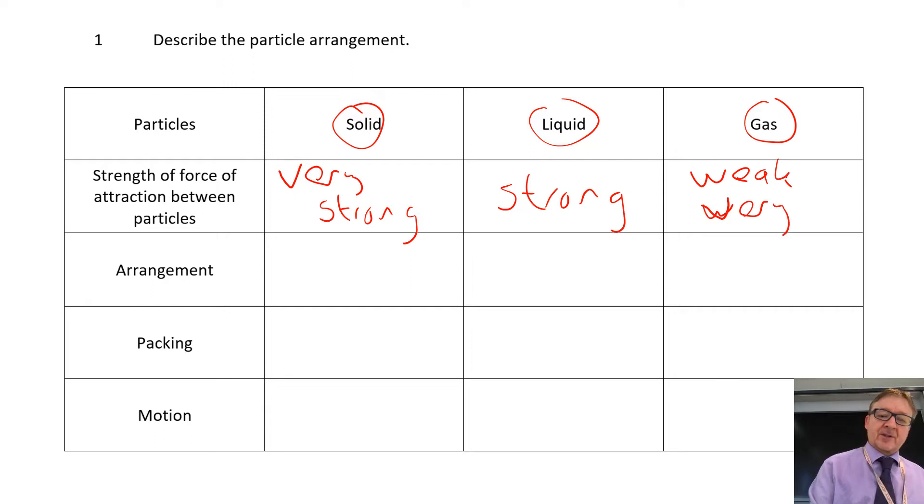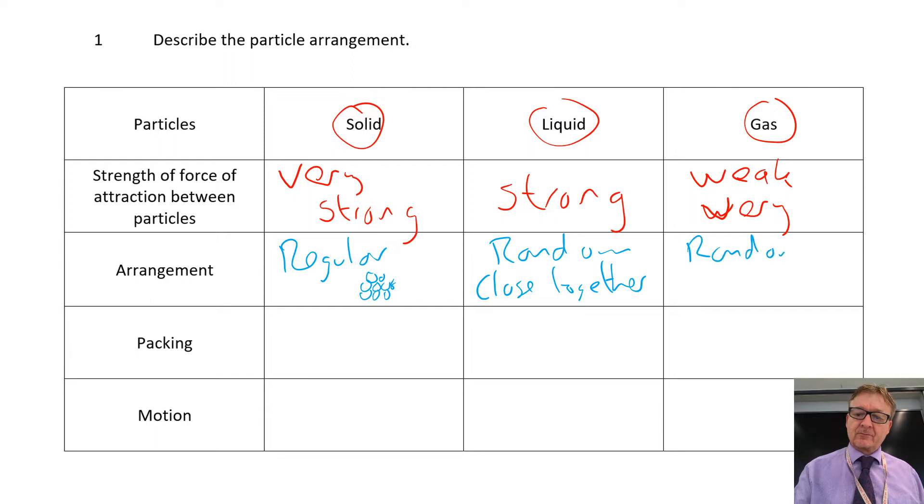The arrangement, they are regular, right? So what they are is they're just like circles all in a line, right? And then the next row, everything's very regular. In a liquid, they are random, but still close together. And in a gas, they are random, but far apart. Okay, that's the arrangement.